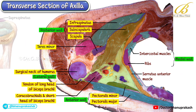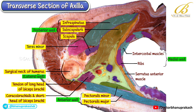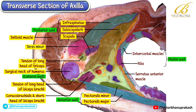Just behind the shaft of the humerus, you can identify the tendon of the long head of the triceps. On the lateral side of the humerus, you can see the deltoid muscle forming the outer contour.